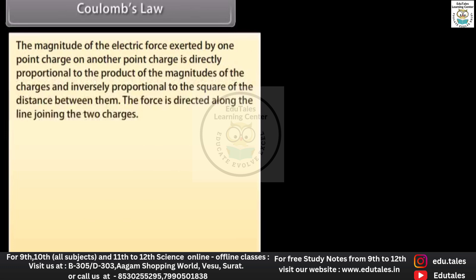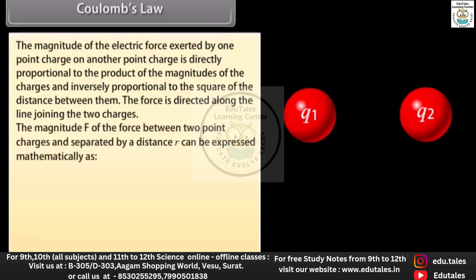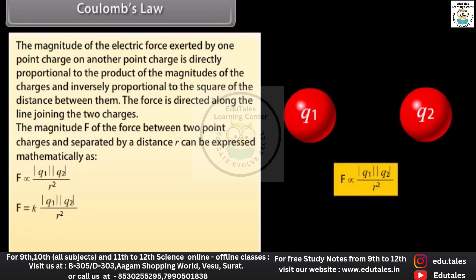Coulomb's law: the magnitude of the electric force exerted by one point charge on another point charge is directly proportional to the product of the magnitudes of the charges and inversely proportional to the square of the distance between them. The force is directed along the line joining the two charges. The magnitude F of the force between two point charges separated by distance r is: F = k|q₁||q₂| / r².